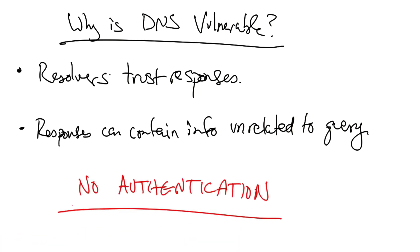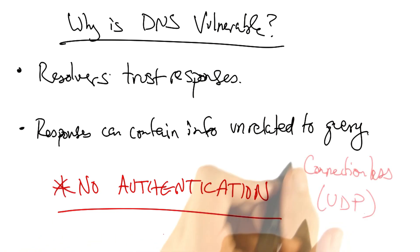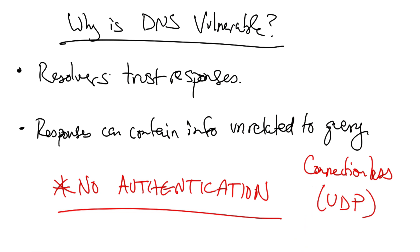The fundamental problem is that the basic DNS protocols have no means for authenticating responses. This allows an attacker to forge responses after a resolver sends a query. A secondary reason that these types of spoofed replies are possible is that DNS queries are typically connectionless.